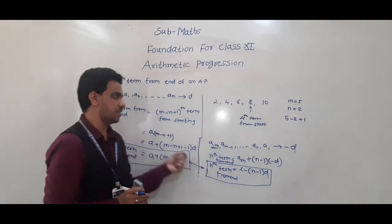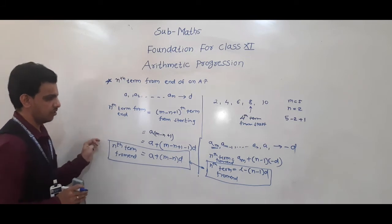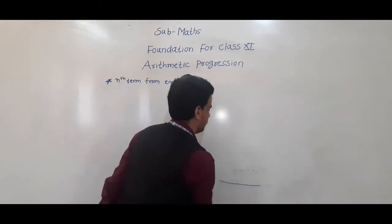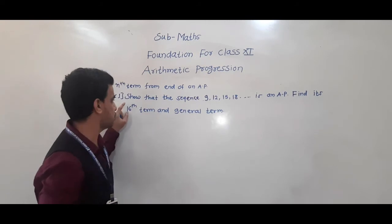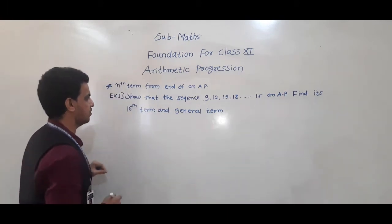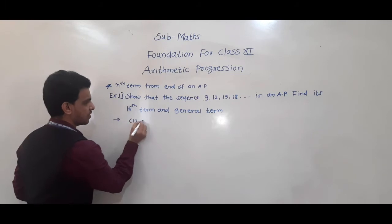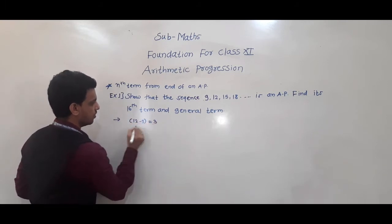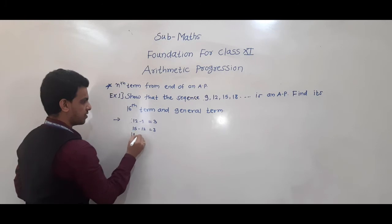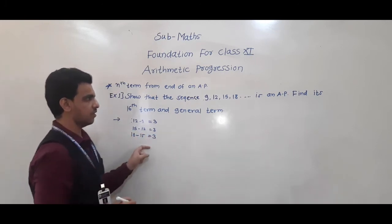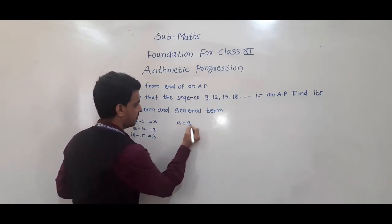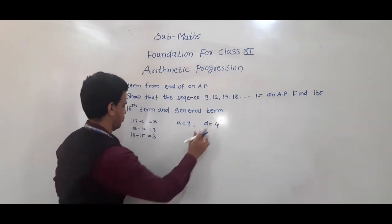Now we will take examples based on these formulas. First example: Show that the sequence 9, 12, 15, 18 and so on is an AP, and find its 16th term and general term. We observe: 12 − 9 = 3, 15 − 12 = 3, 18 − 15 = 3. Everywhere this difference is constant, so this sequence is an AP. Thus a = 9 and d = 3.